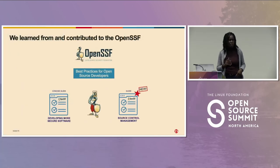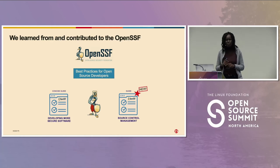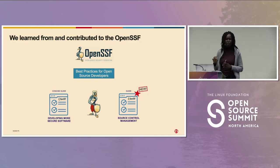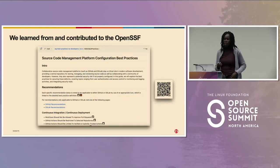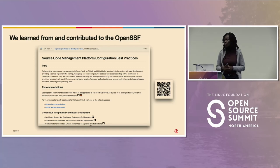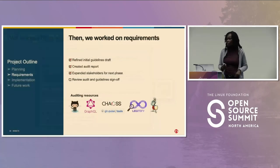The OpenSSF Best Practices Working Group was a heavy resource for us. The scorecard project was very useful. A new guide also emerged called the Source Control Management guide — that's where I learned about legitify. We contributed to drafting that document, which covers GitHub and GitLab, continuous integration, and policy recommendations. It's a good resource especially if you come from a GitLab background.